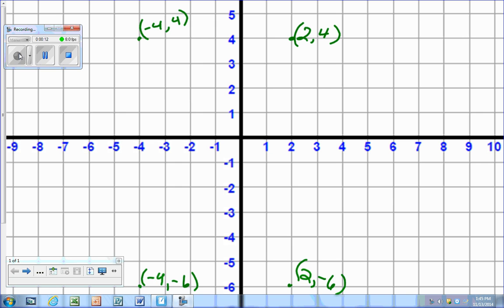If I wanted to find the distance between this point and this point, I could just count 1, 2, 3, 4, 5, 6, and I'd get 6 units.